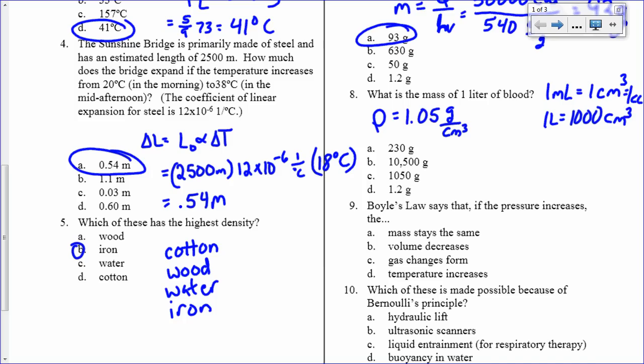So I want to know the mass. The mass is the density times the volume. That's from our density relationship. And so that's 1.05 grams per cubic centimeter times 1,000 cubic centimeters. So that's 1050 grams.